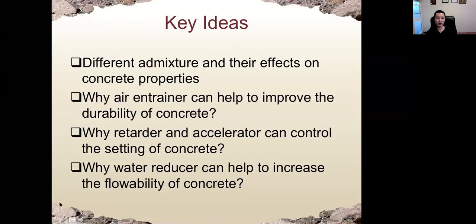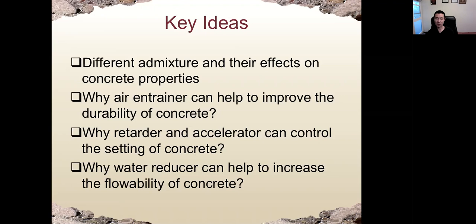Today we discussed the major types of chemical admixtures. Remember the different admixtures and how they change concrete properties. For example, why air-entraining agent can improve concrete durability due to freeze-thaw cycles, sulfate attack, or ASR. Why retarders and accelerators can increase or reduce the setting time, and how different types of accelerators work on different compounds such as C3S or C3A. And why water reducer can increase workability or maintain workability while reducing the water-to-cement ratio.